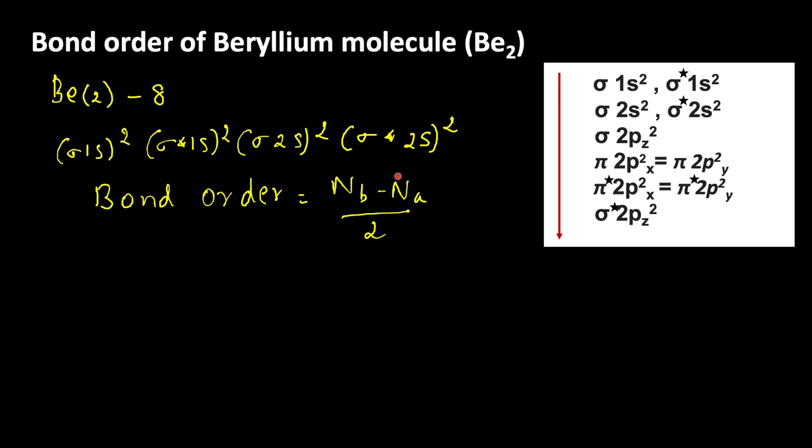For anti-bonding electrons, sigma star 1s2, so 2 electrons and sigma star 2s2, 2 electrons. So total 4 electrons are present in anti-bonding electrons. It means the number of bonding electrons and anti-bonding electrons are equal in beryllium molecule.